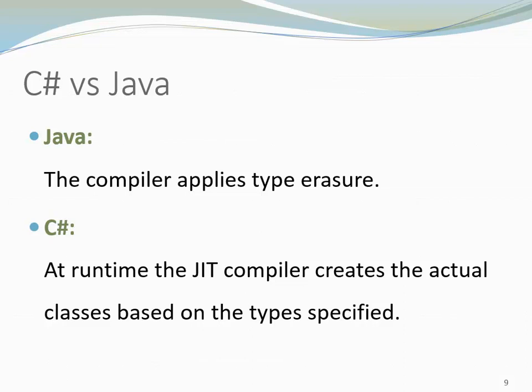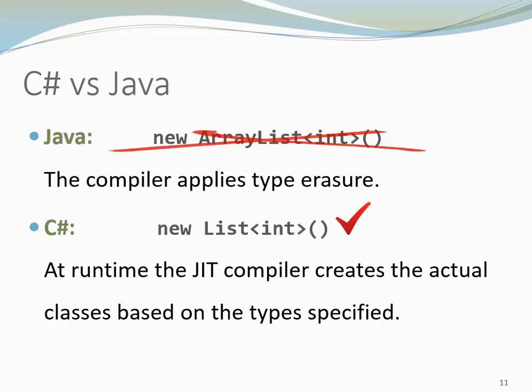Let's look at an example. If you try to create a new ArrayList of type int in Java, this won't compile. Java only accepts reference types as type arguments. However, if you create a new list of type int in C#, this works perfectly fine. Note though, that in C#, List is a class and not an interface like in Java. In C#, the corresponding interface is called IList.